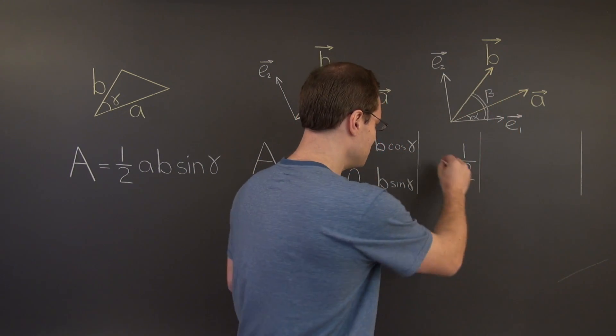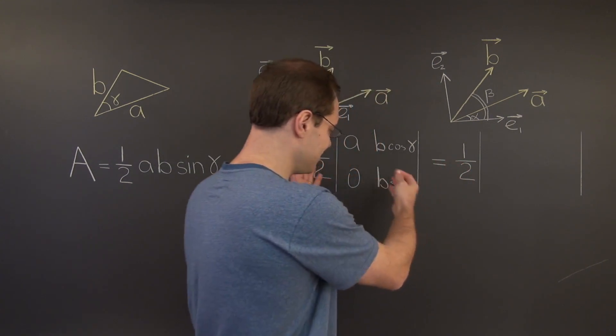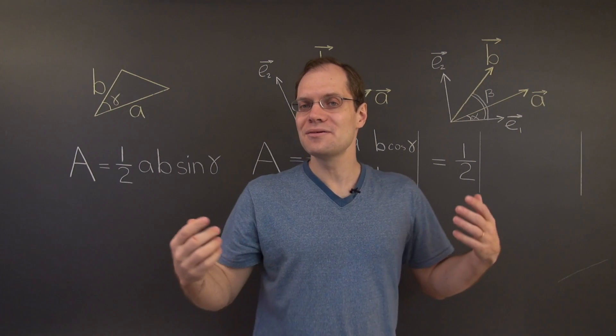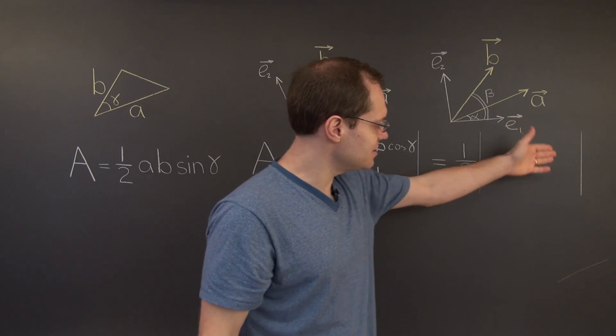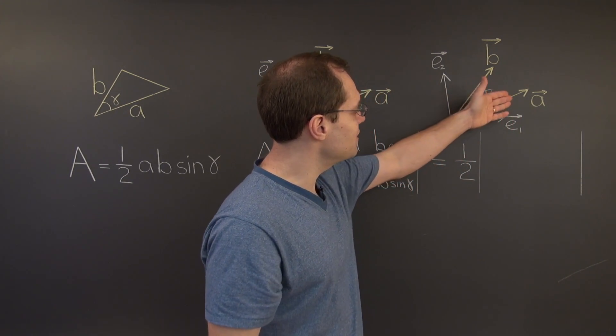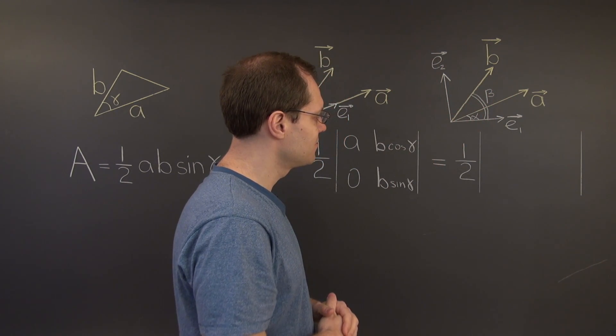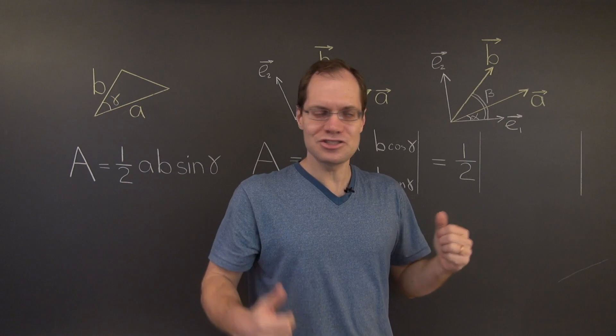The rest is the same. Let me put an equal sign here because it's still the area of this triangle. But the rest of the algorithm is the same. We must populate this determinant with the components of the vectors A and B with respect to this new basis.